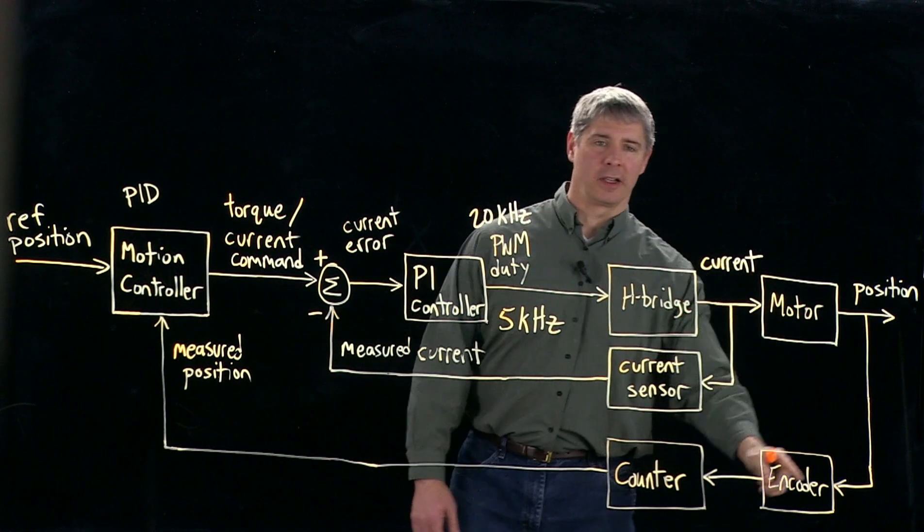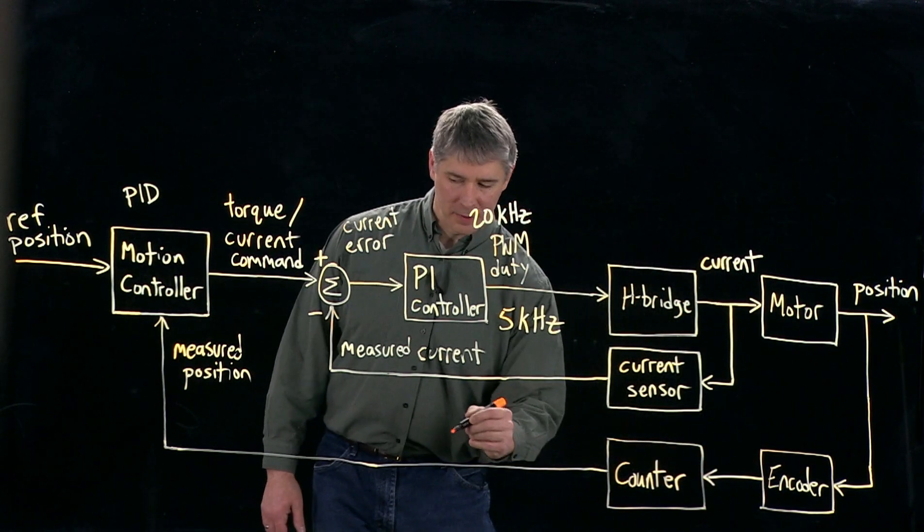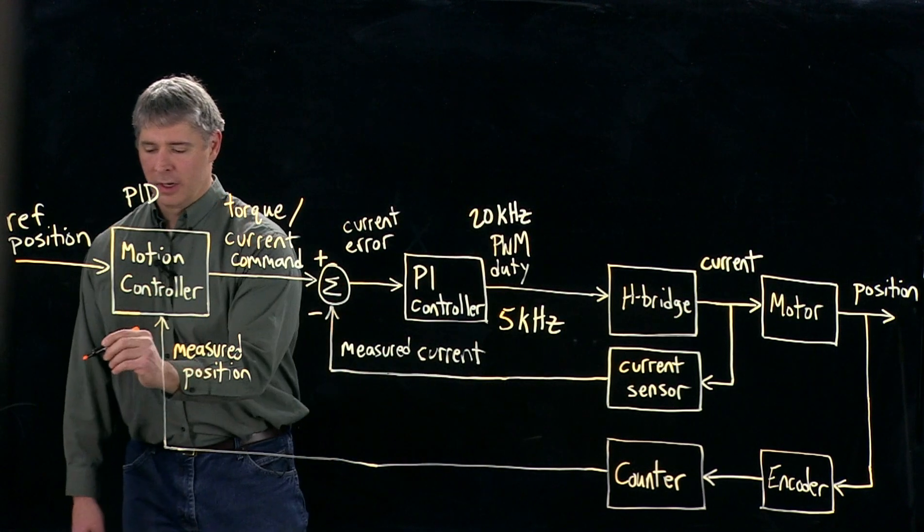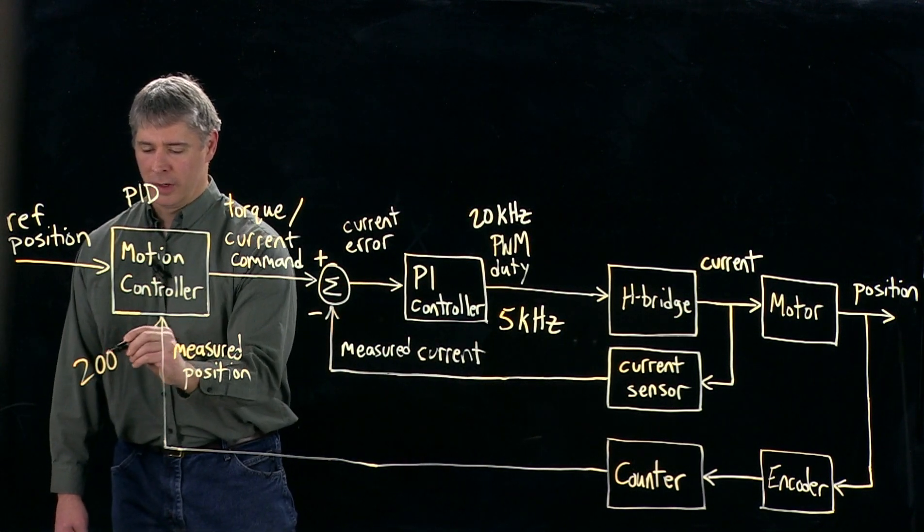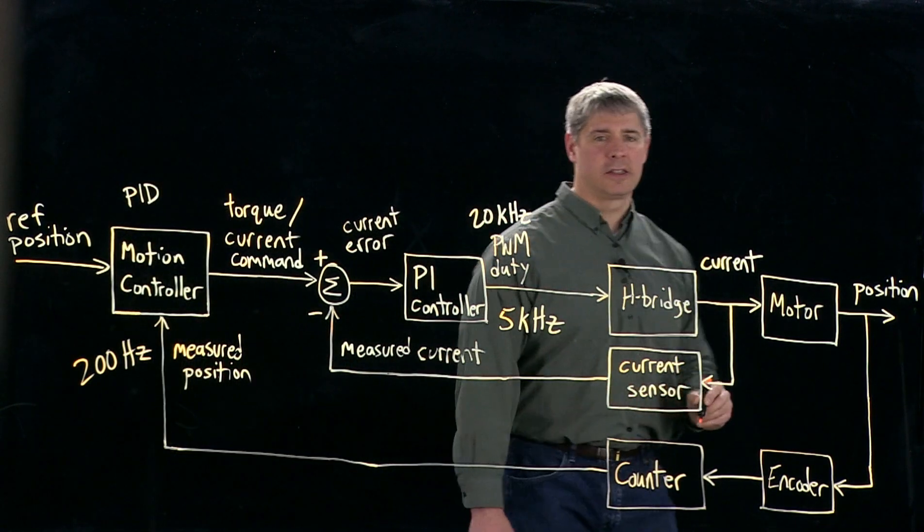This outer loop is going to be running slower, dominated by any mechanical time constants. And in this example, let's say that this outer controller is running at 200 hertz.